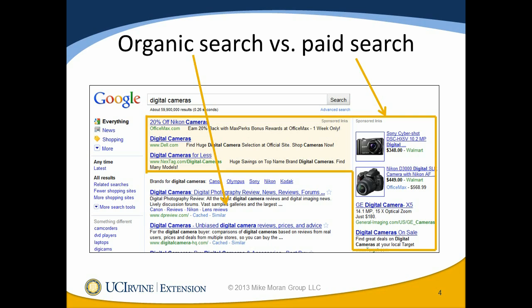You pay a certain amount — a nickel, a dime, a dollar, or even much more — every time someone clicks on your ad to go to your website. In return, you get to control what's on the screen. Titles like '20% off Nikon camera' or 'digital cameras on sale' are titles you chose, and the descriptive words beneath them are things you chose as well.